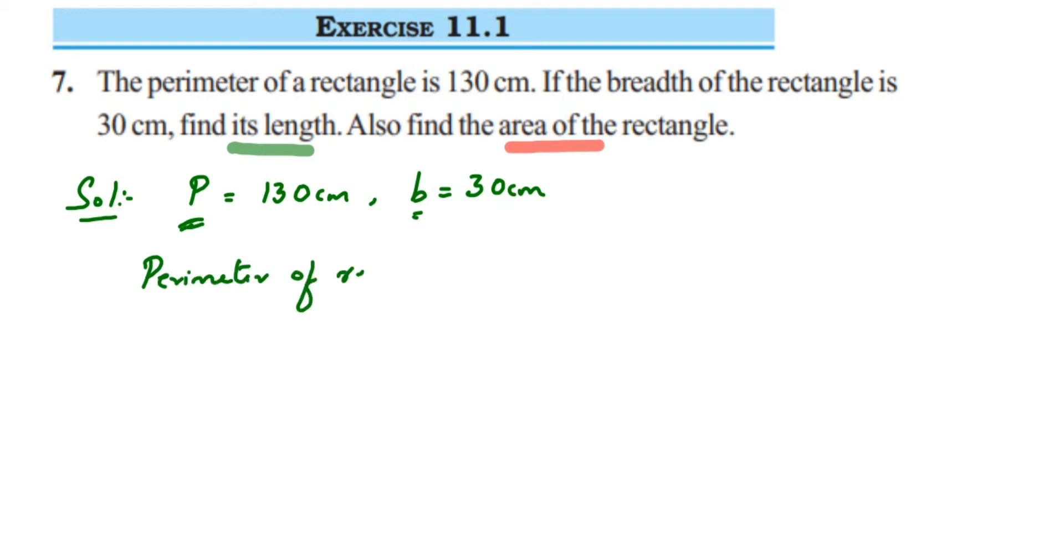Perimeter of a rectangle formula is 2(L + b). Now we know the perimeter is 130 centimeters, so we substitute: 130 = 2(L + 30). We don't know the length yet, so we write L. The breadth is 30, so we substitute 30 here.